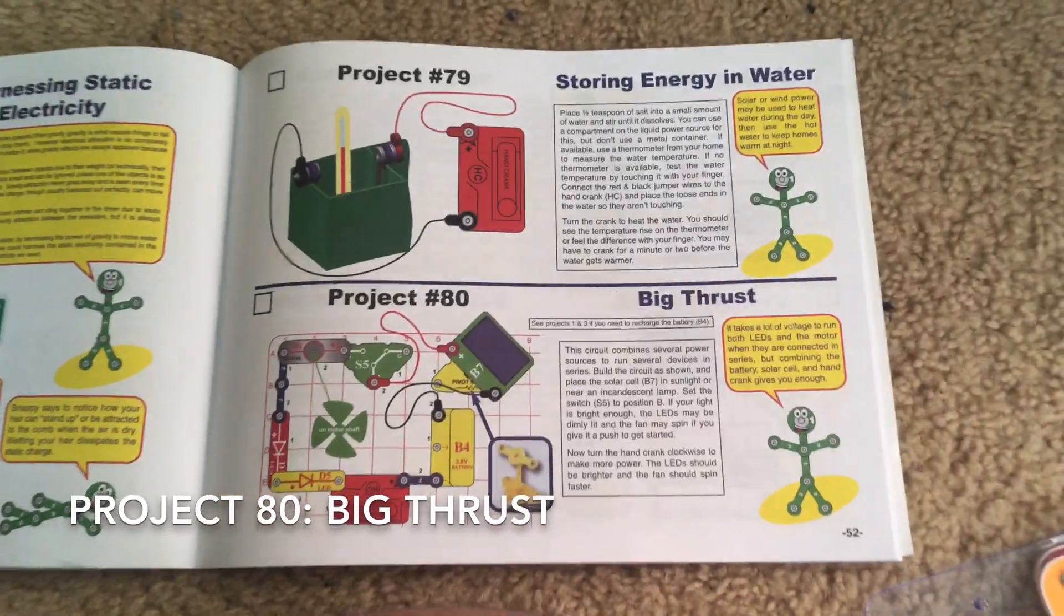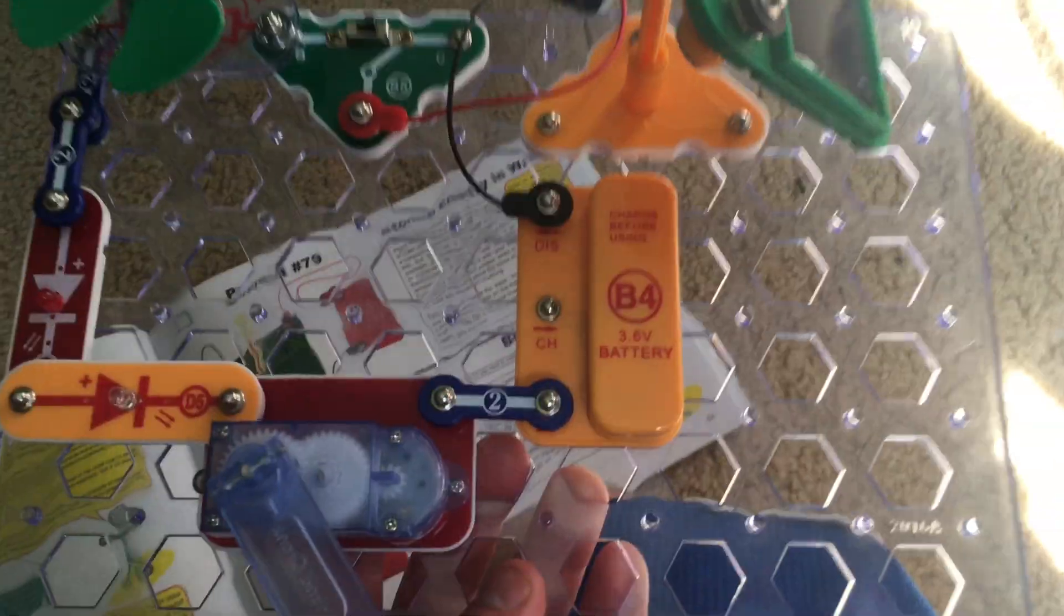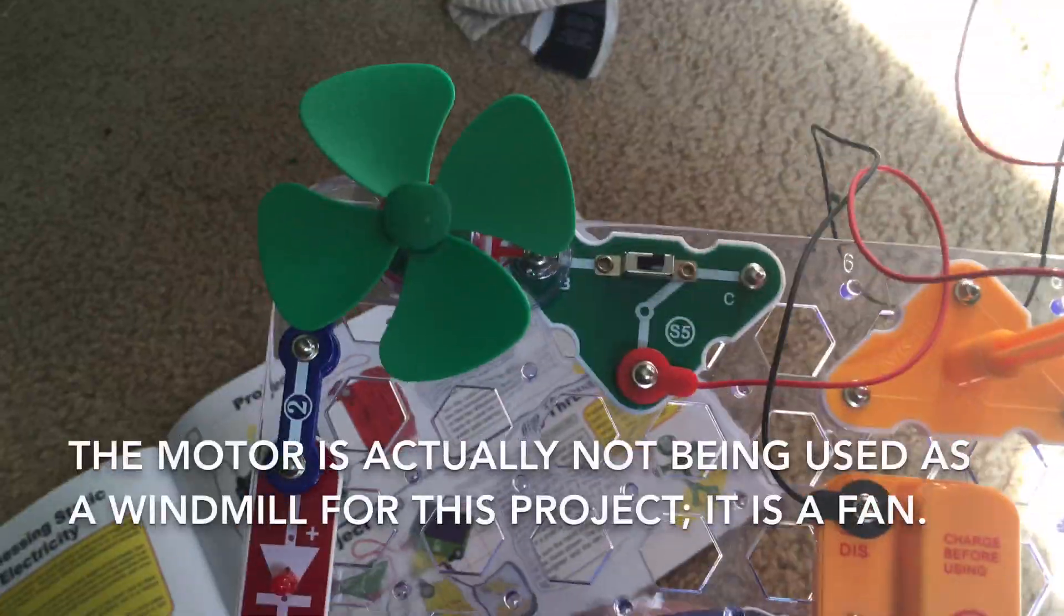Project 80 is Big Thrust. We are going to use several power sources: the battery, the solar cell, the hand crank, and the windmill.